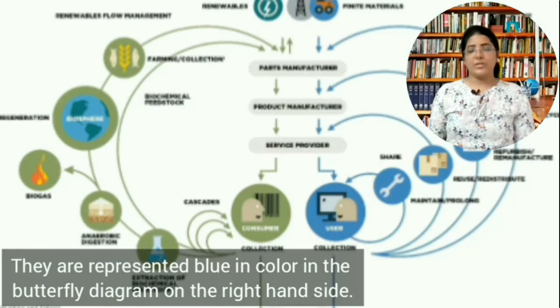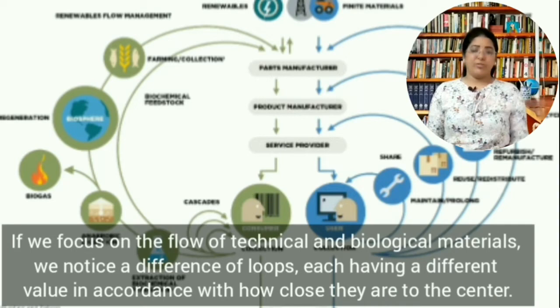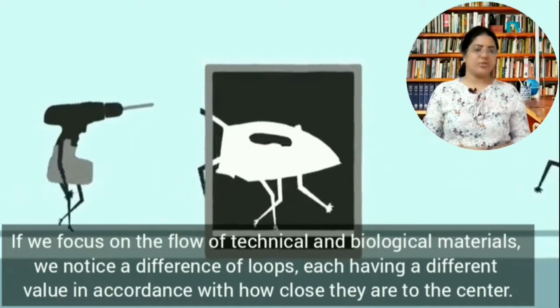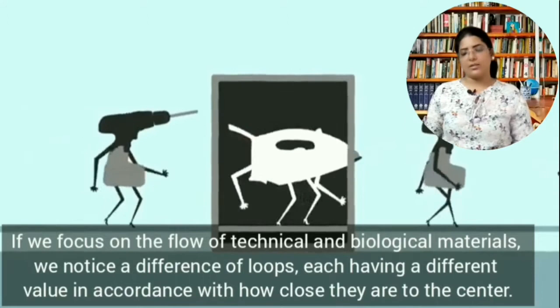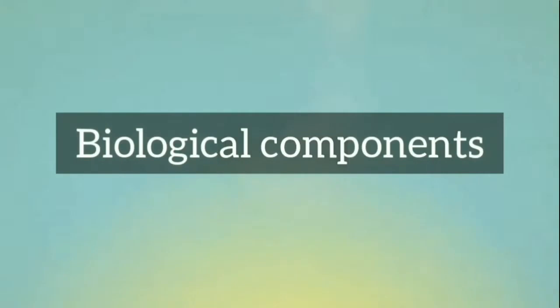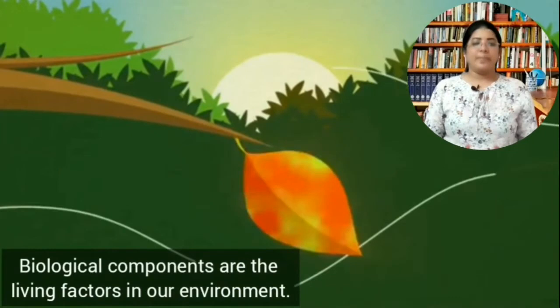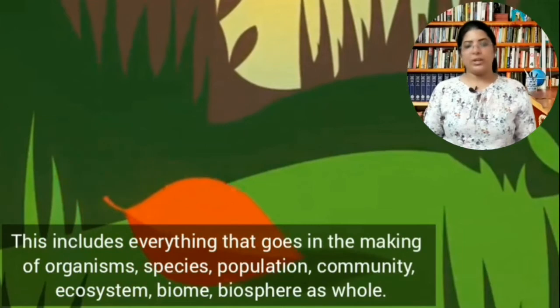Biological components are represented green in color on the left-hand side of the butterfly diagram, while technical components are represented blue on the right-hand side. If we focus on the flow of technical and biological materials, we notice a difference of loops, each having a different value in accordance with how close they are to the center. Biological components are the living factors in our environment. This includes everything that goes into the making of organisms, species, population, community, ecosystem, biome, and biosphere.